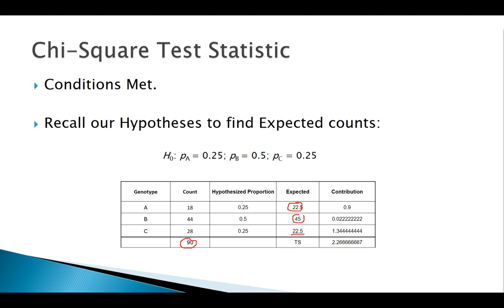All my expected are over 5, no real small ones, we're in good shape. Notice your expected can be decimals. We could never have an observed that's a decimal, but expected can be decimals. Then using our formula, observed minus expected squared over expected, and summing all those up for each cell, we get our test statistic of 2.267.